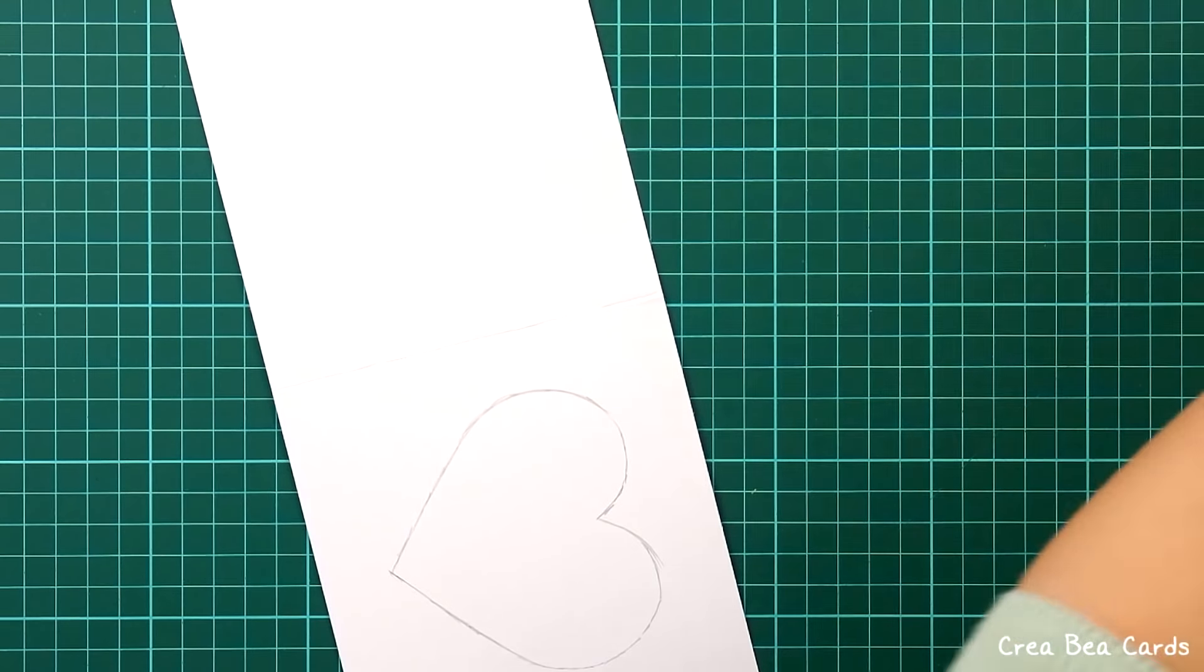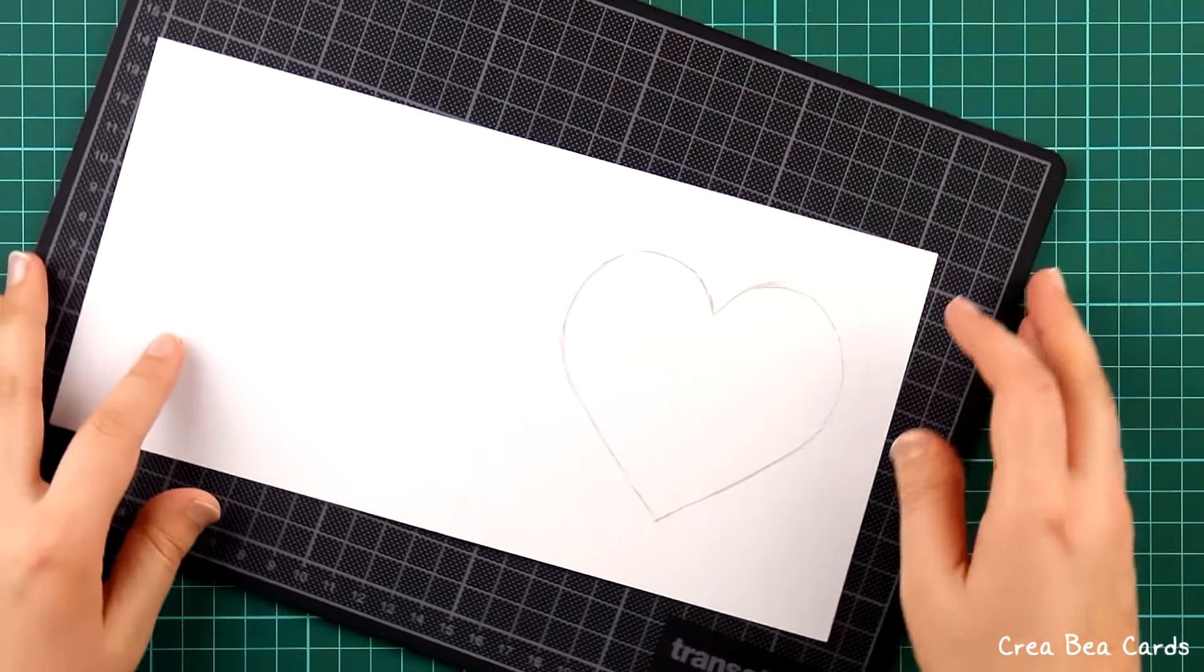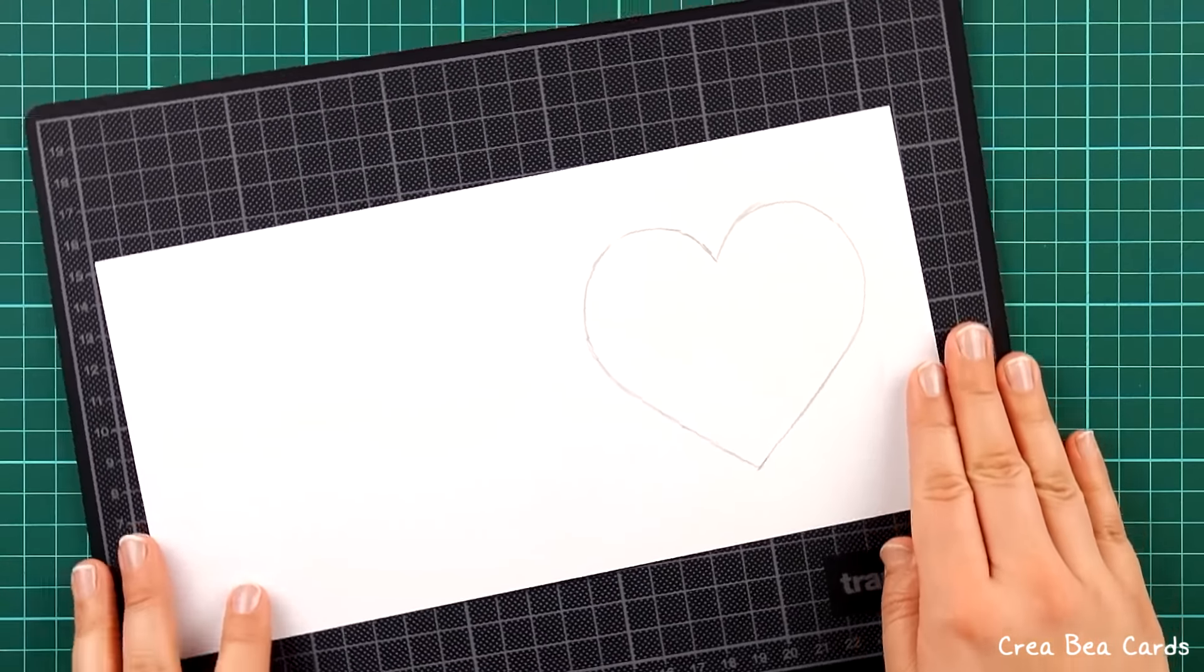Once you've traced the heart, you can cut it out with a craft knife. I use a smaller cutting mat to be able to turn the heart around while cutting it out.